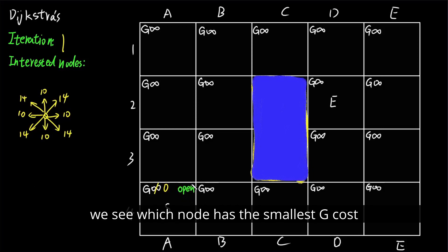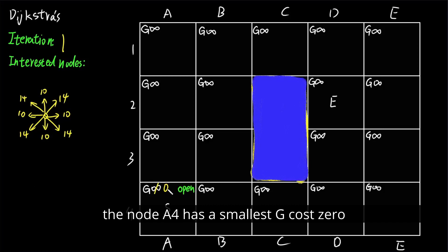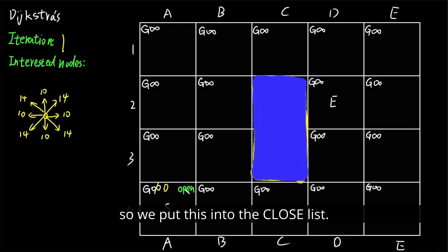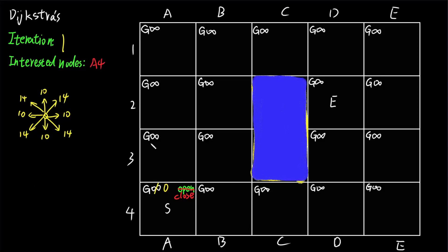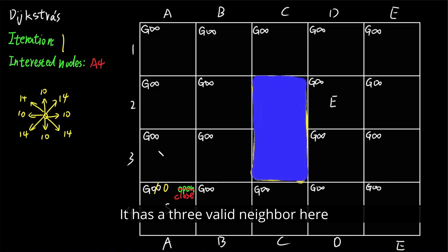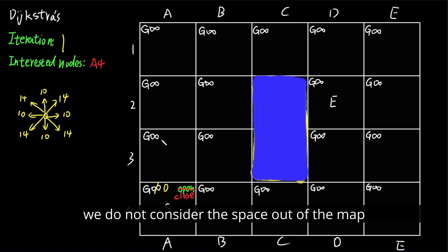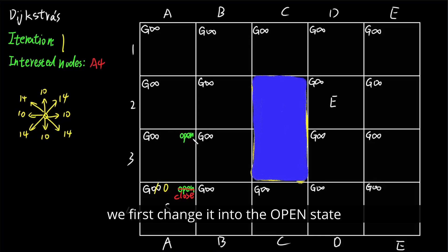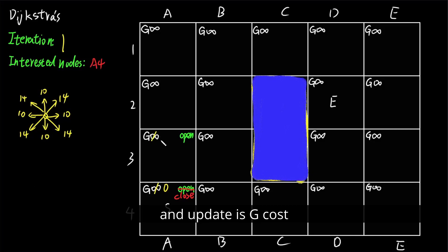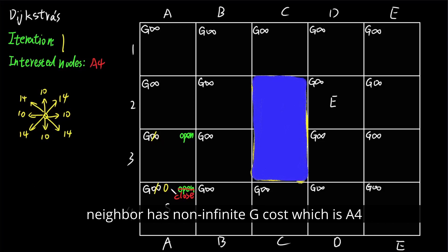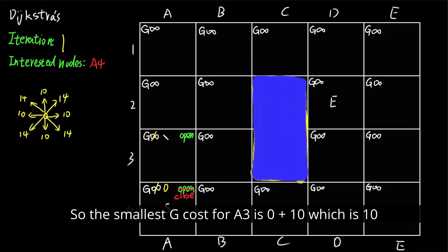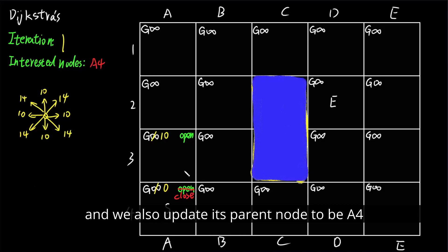Now we are in iteration one. In the open list, we find which node has the smallest g cost. We have only one node here, and node A4 has the smallest g cost of zero, so we put it into the closed list. A4 is the current node, and we update its neighbors. It has three valid neighbors. For the first neighbor A3, we change it to open state, update its g cost — the only neighbor with non-infinite g cost is A4 — so A3's g cost is 0 plus 10, which is 10. We update its parent node to A4.